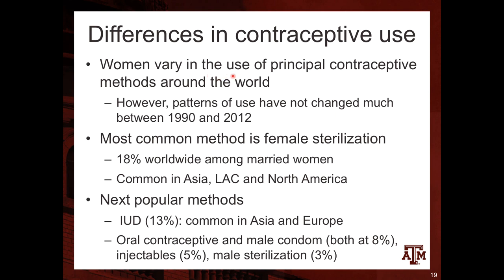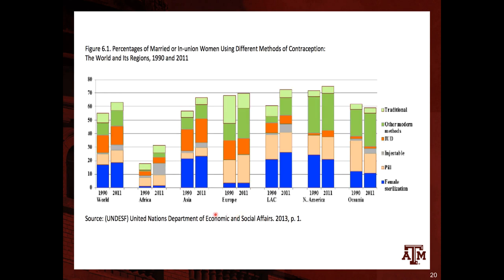Women vary in the use of principal contraceptive methods around the world. However, the patterns of use have not changed much between 1990 and 2012. The most common method is female sterilization at 18% worldwide among married women, which is really common in Asia, Latin America, the Caribbean, and North America. The next popular methods are IUD at 13%, common in Asia and Europe, and oral contraceptive and male condoms, both at 8%, injectables at 5%, and male sterilization at 3%. This information is summarized in the accompanying graph.